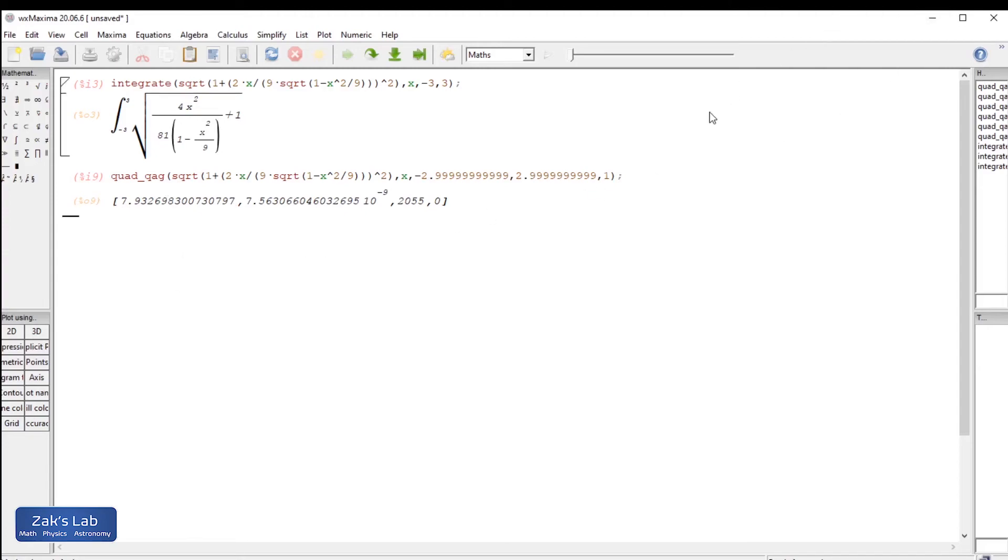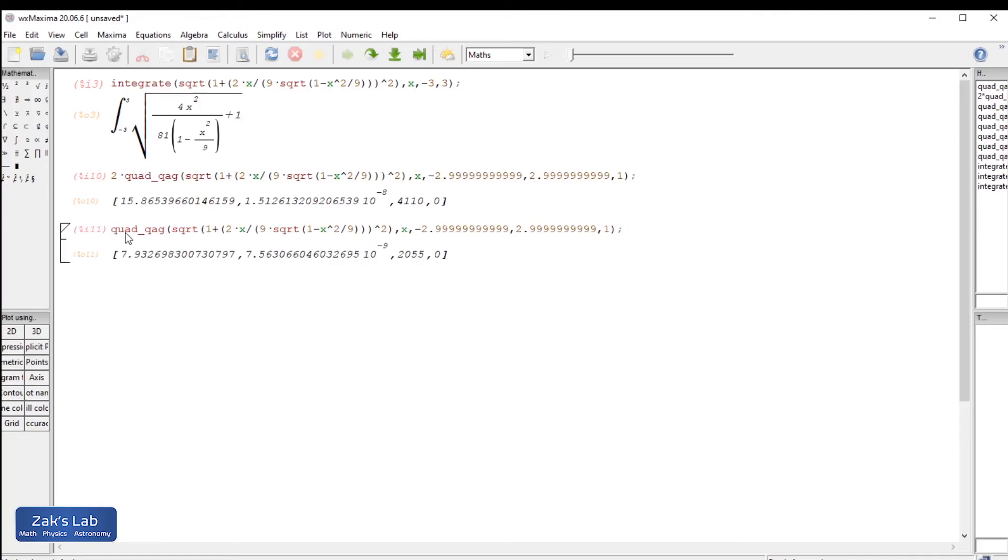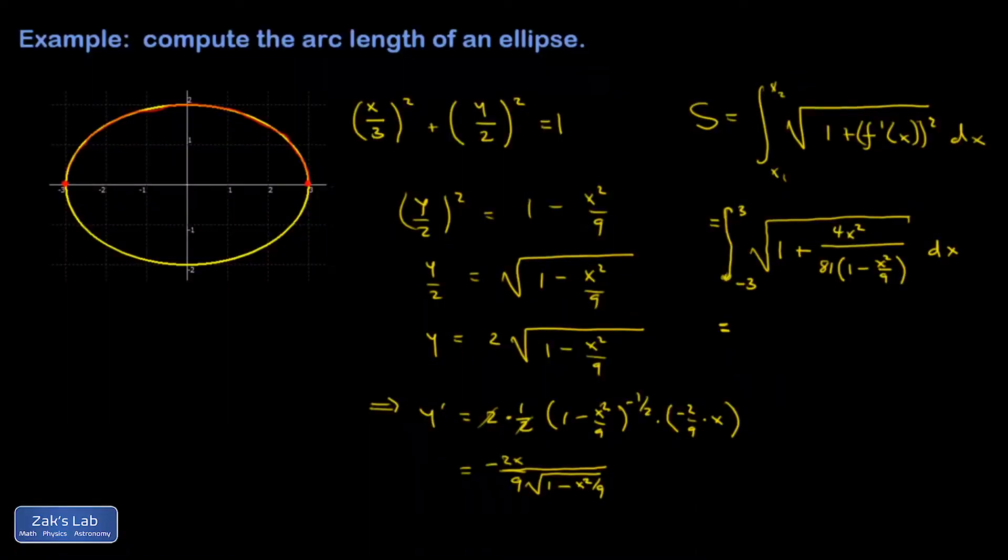And that's just the upper half of the ellipse. Why don't I just save myself some work and multiply by 2 in maxima. And I get for the whole ellipse 15.865. So I want to get this number real quick. Just so I can write it in the answer.